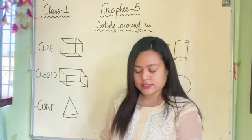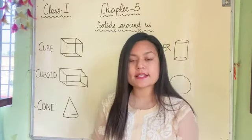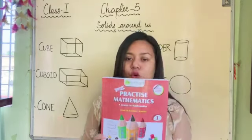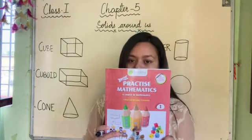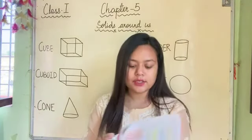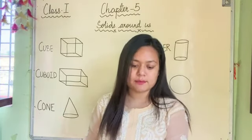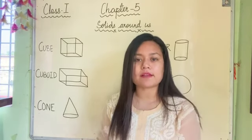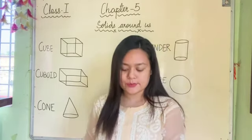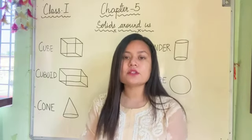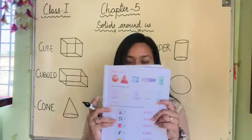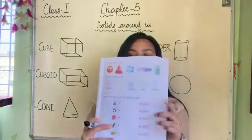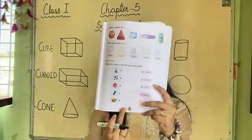Now, children, we will start with our today's topic, that is solids around us. You have to open your practice mathematics book, chapter number five, shapes around us. In the previous video we have learned about common shapes, but in this video we will be learning about solids around us. Open your page number 51.